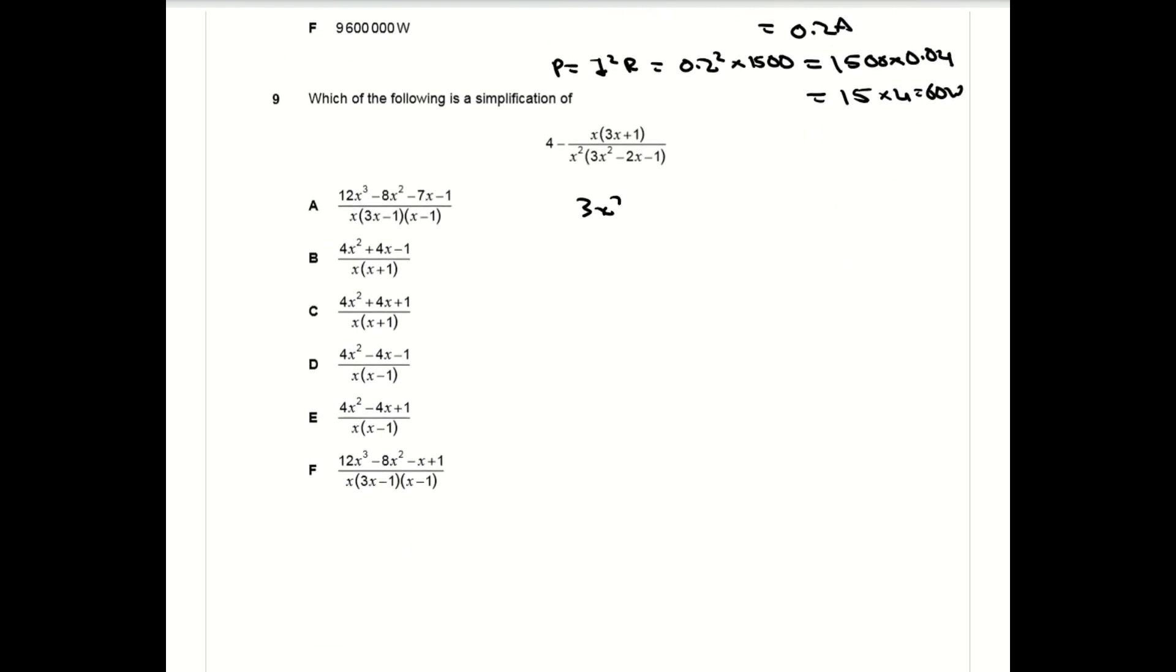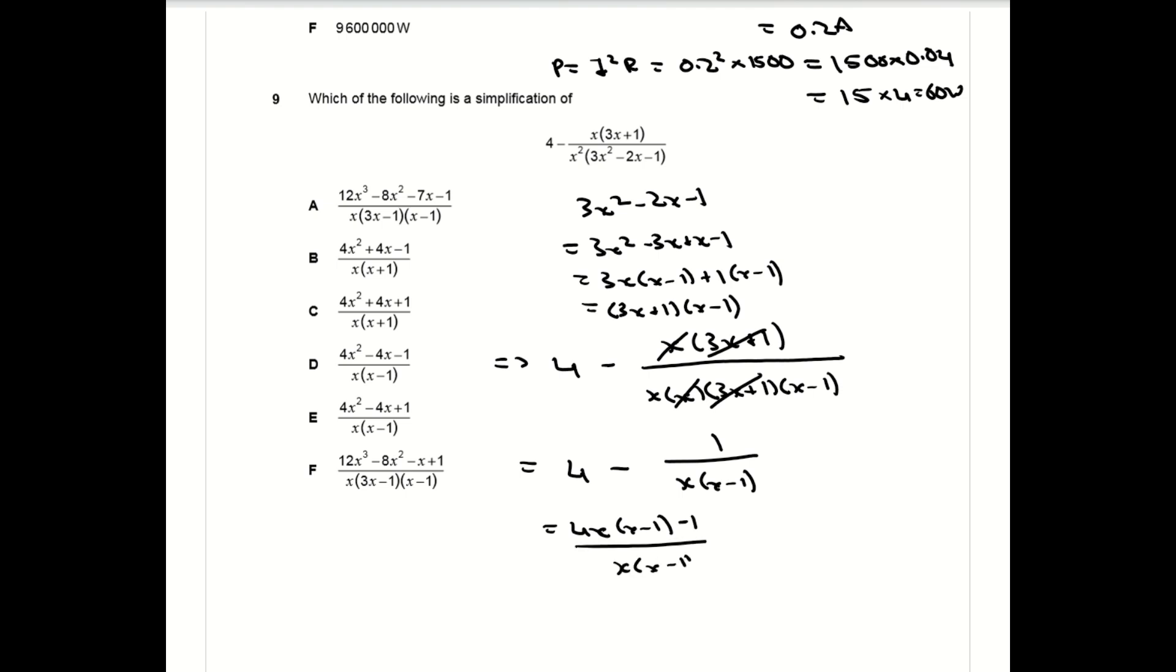Question nine is a pretty straightforward simplification question. The best way to go about these sorts of problems is just to do as much practice as possible with them and try and get faster at solving them. What you want to do for this question is factorize the denominator, cancel out the common factors, and then basically rearrange until you get into the simplest form possible, which is D.